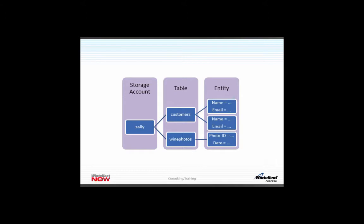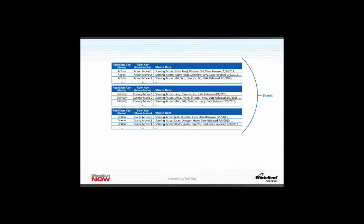When you use Table Storage, you use the same storage account as Blob Storage. Instead of containers, you have tables — like a customers table and a wine photos table. Inside those tables, you store entities that appear in a column structure. They're really the properties of your POCOs that appear in the entity, and you'll see that in code in just a second.